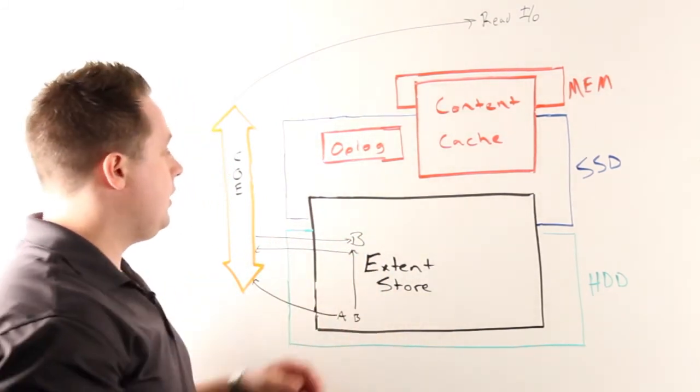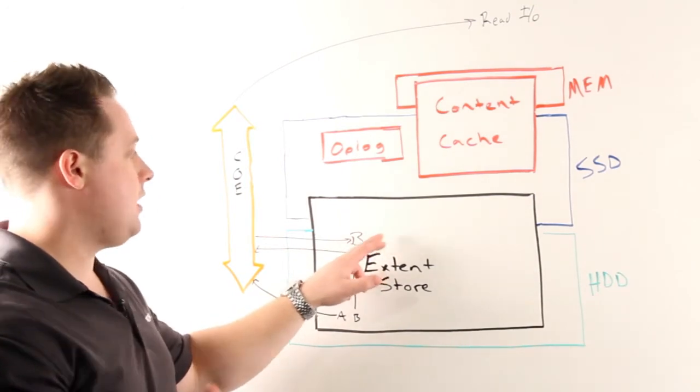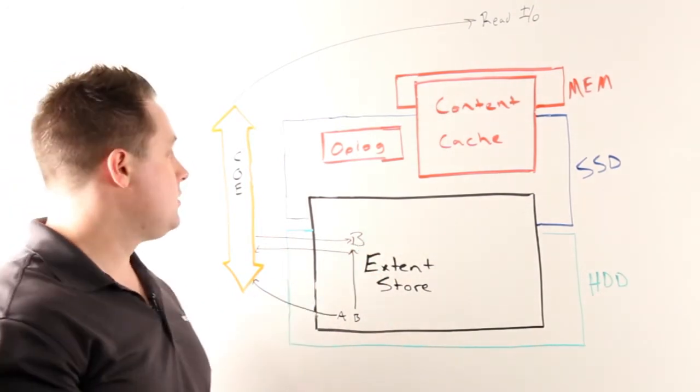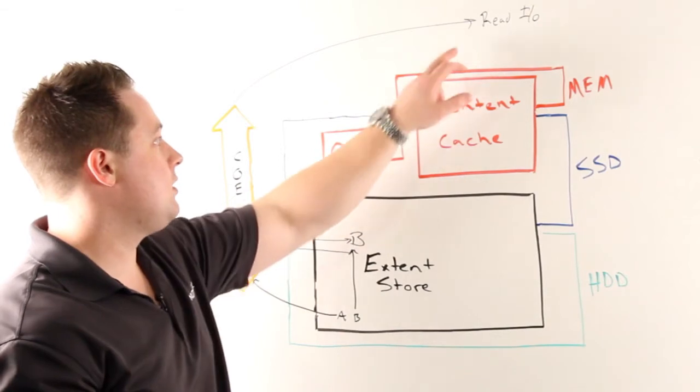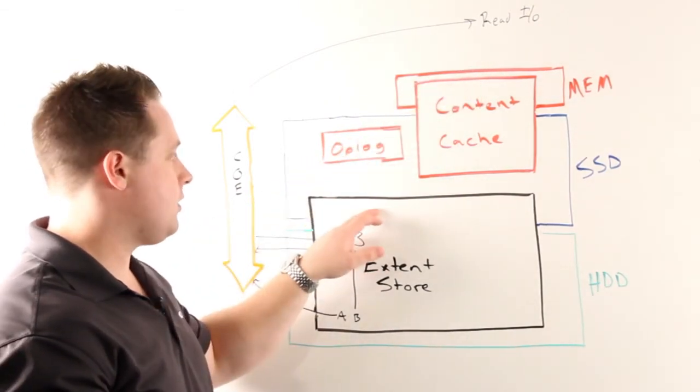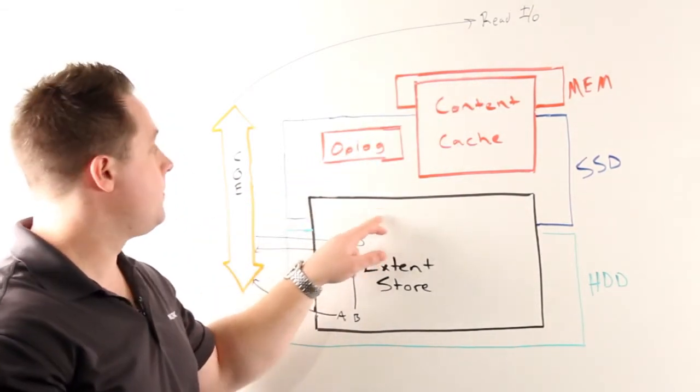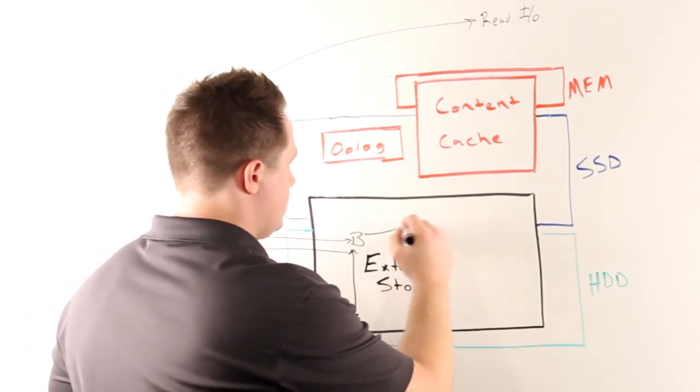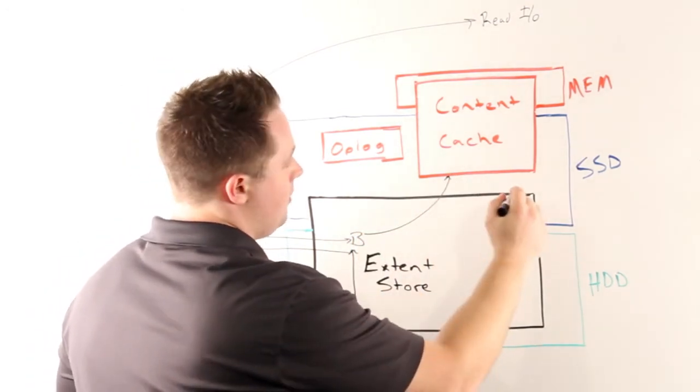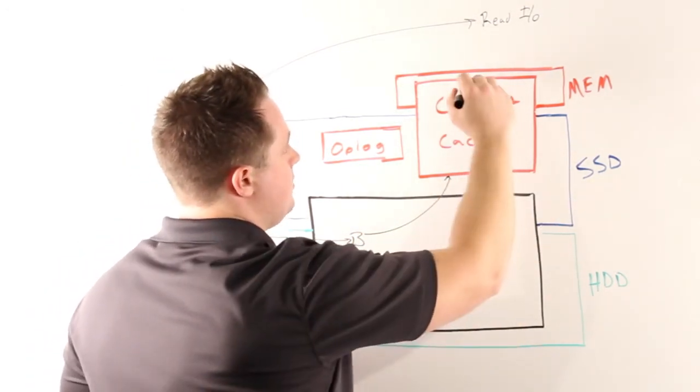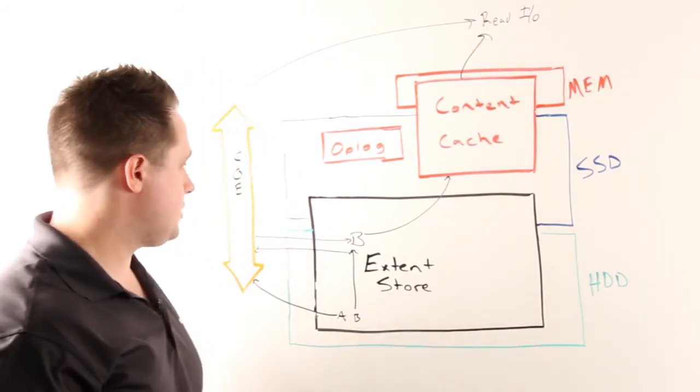At that point it can leverage the same read path of any data. It can go into our content cache and the read can be served, or it can go into our SSD tier and be served from there. We can allow it to be cached, or the read request can be served from the SSD portion.